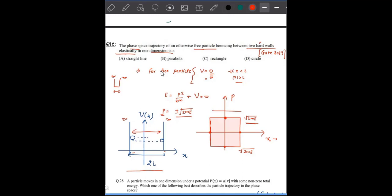Your potential is zero here, so your p is constant. At the wall position where potential becomes infinity, your p will become zero. So it becomes a rectangle in phase space.